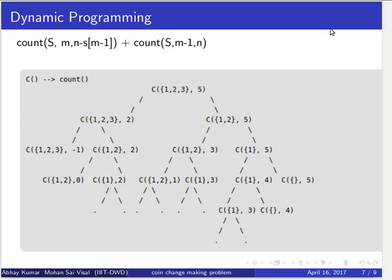In the second step, count({1,2,3}, 3, 2) again branches: the left subtree gives count({1,2,3}, 3, minus 1), which is negative — a base case returning 0. The right subtree gives count({1,2}, 3, 2). Similarly, count({1,2}, 3, 5) also divides further. This division continues until all branches reach base conditions of N equals 0 returning 1, or N less than 0 returning 0. By adding all sub-values we get the total number of possible ways to give change.